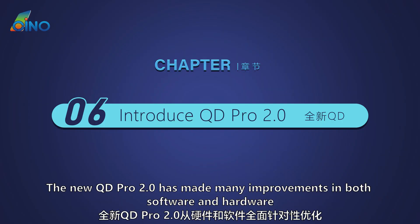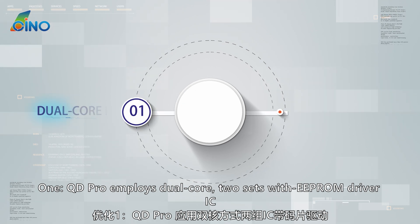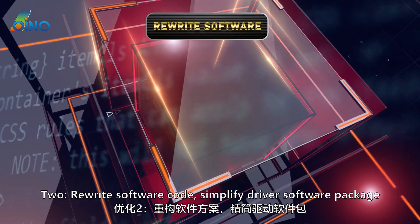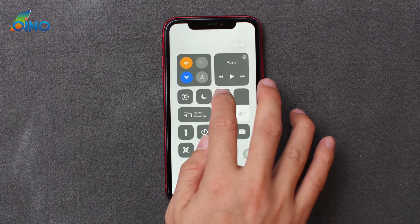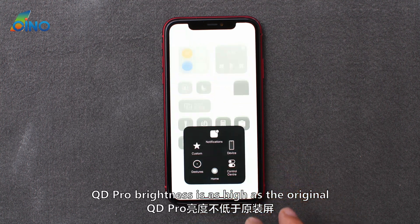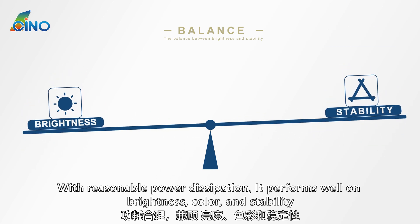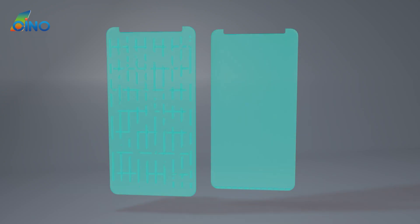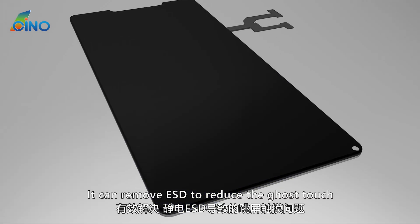The new QD Pro 2.0 has made many improvements in both software and hardware. First, QD Pro employs dual core — two sets with EEPROM driver IC — for more powerful performance. Second, the software code has been rewritten to simplify the driver software package, achieving higher stability with optimized data. Third, QD Pro brightness is as high as the original, with reasonable power dissipation performing well on brightness, color, and stability, avoiding heating issues caused by high-power backlight units and preventing touch circuits from being damaged. Fourth, ESD conductive silver glue is employed to remove ESD and reduce ghost touch.